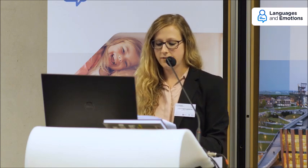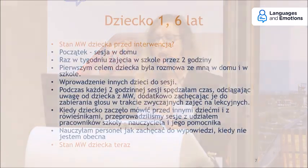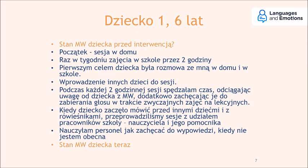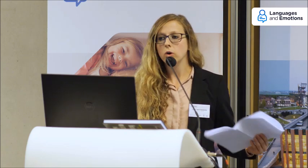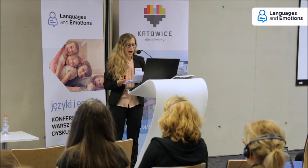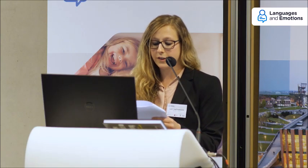Starting with Child One — this child was six years old. Before the intervention, at school she didn't talk to any adults and spoke to just two friends. The other children didn't hear her voice; when I started working with her, other children said 'she doesn't talk.' She spoke to those two friends only when out of earshot of the others. My intervention started with a home session — I always start at home because selective mutism is place and person dependent, and the child is most comfortable at home. I then attended school once a week for two hours.